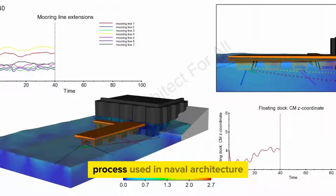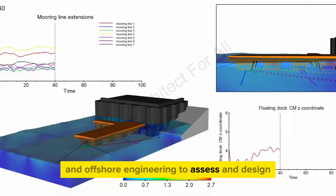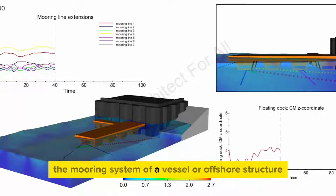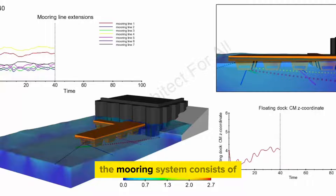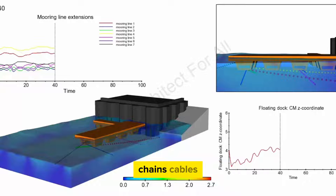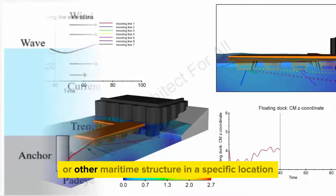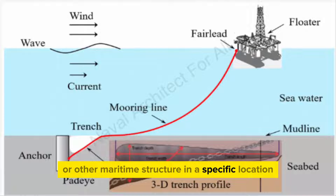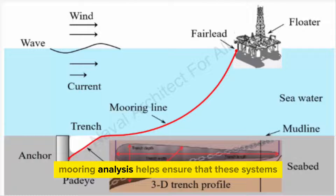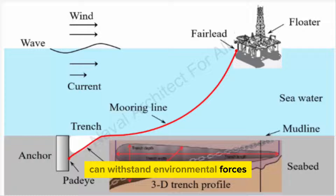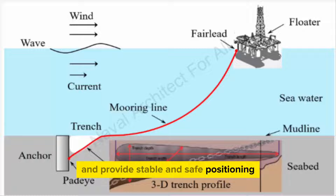Mooring analysis is a process used in naval architecture and offshore engineering to assess and design the mooring system of a vessel or offshore structure. The mooring system consists of the arrangement of anchors, chains, cables, and other components that secure a ship, floating platform, or other maritime structure in a specific location. Mooring analysis helps ensure that these systems can withstand environmental forces such as wind, waves, and currents, and provide stable and safe positioning.